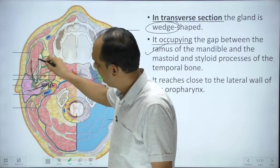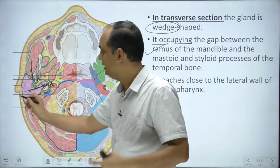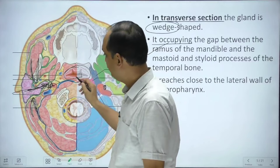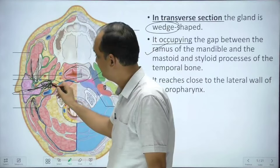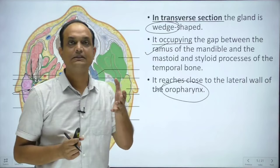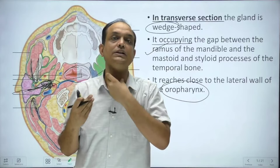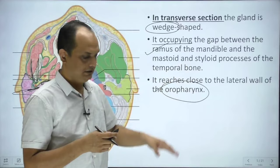The gland is invaginating or extending inside between the mandible and the mastoid process. If you put a needle through this deep area, you would reach the pharynx. Just outside the pharynx, this gland is approaching towards the styloid process. It reaches close to the lateral wall of the oropharynx. The gland shows an outer surface, and between the mandible and mastoid process, it invaginates deep and approaches the pharynx, also coming in relation with the styloid process.